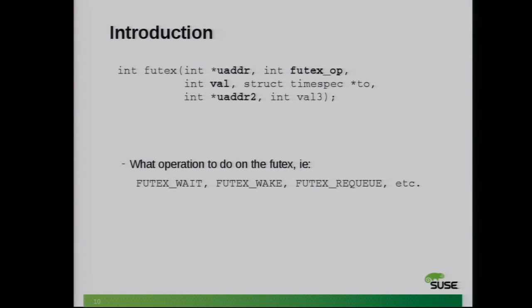When you call a Futex wait operation, you already know what value is at that address in user space. So that val parameter is the expected value it already has. This is really important because when you call into the system call, there's a lot of stuff that goes on before it actually blocks — reference counting, processing, taking locks in the kernel — and that value in user space could very well change. So that value is really to prevent users from deadlocking themselves. It will always verify that the address still has that content at that value.